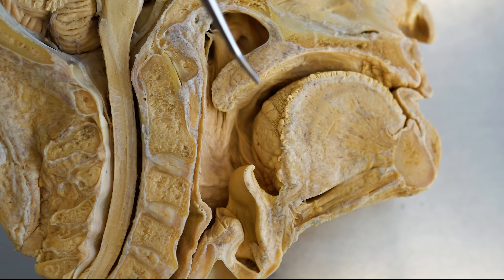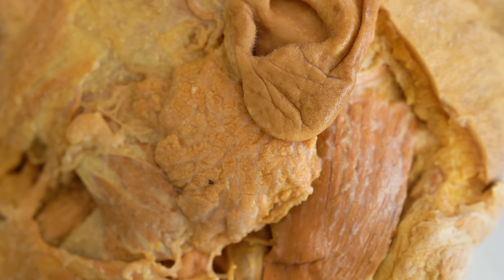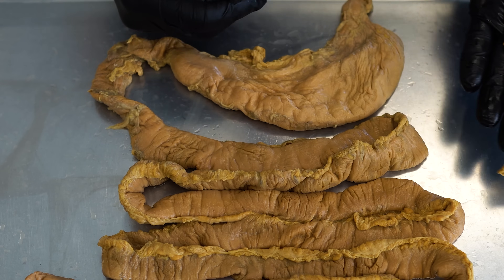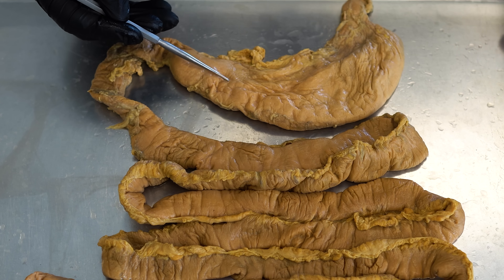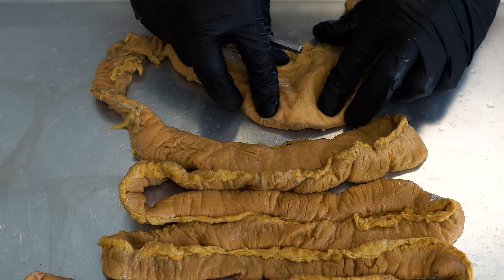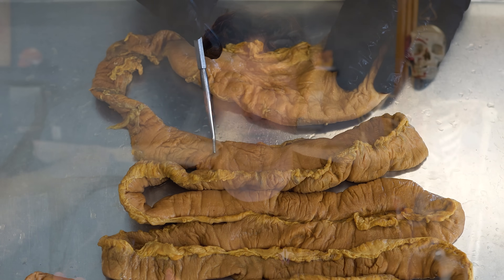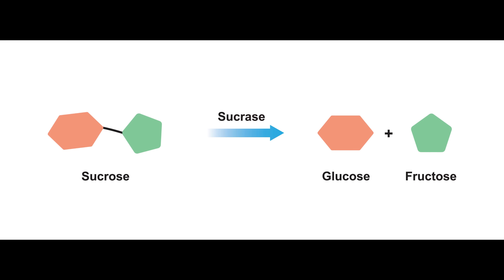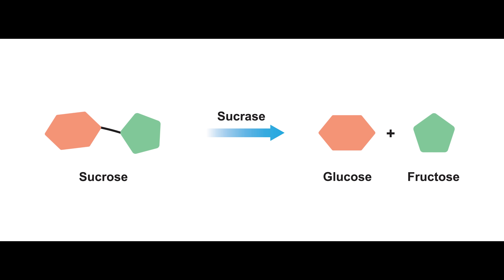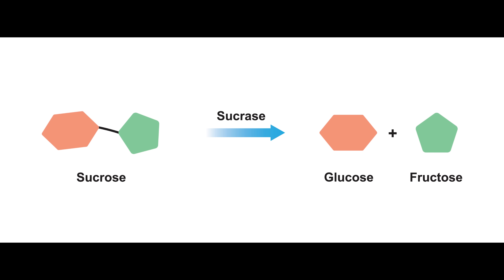Once we place sugar and starches into our mouths — the oral cavity — digestion begins through chewing and saliva, which contains enzymes to start the digestive process. We move this down the esophagus into the stomach, where sugars and starches mix with acid through smooth muscle contractions, then make it to the first part of the small intestine called the duodenum. The duodenum contains specific enzymes: sucrase breaks down sucrose into individual glucose and fructose molecules.